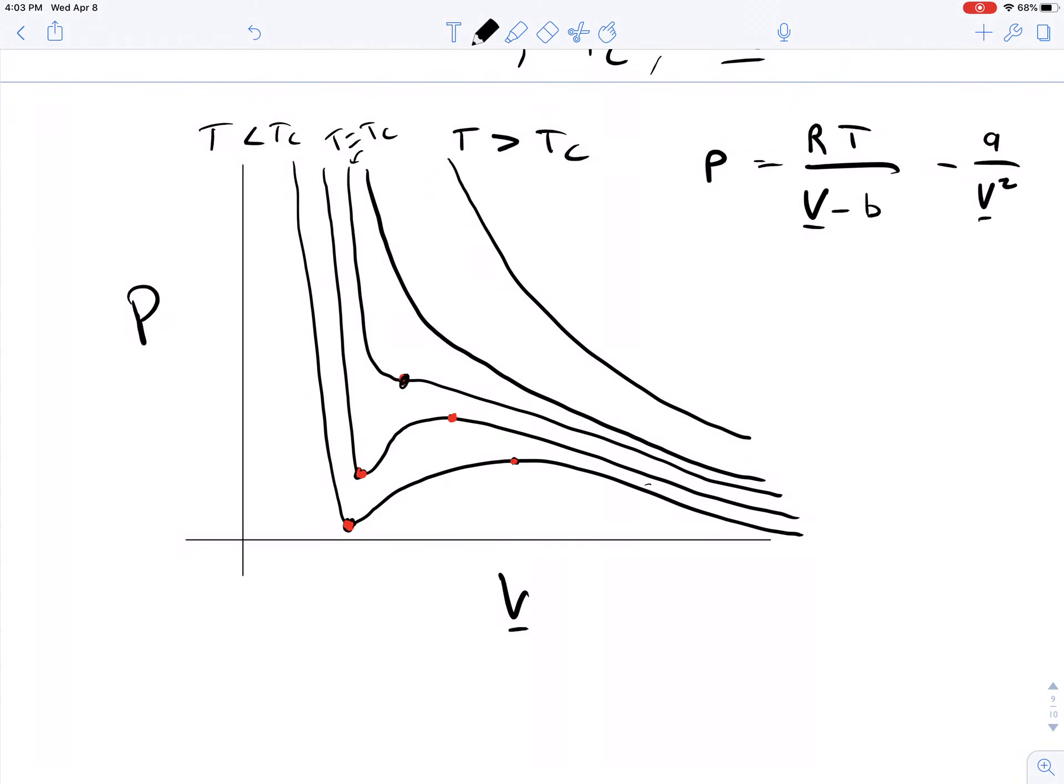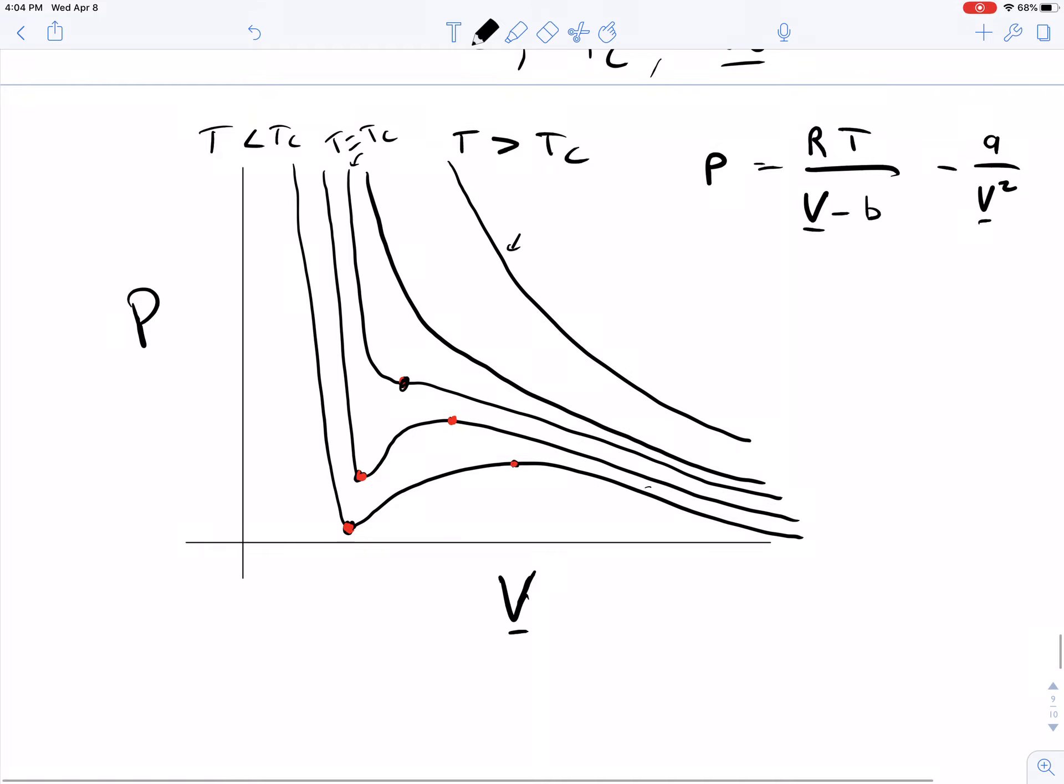Hello everyone. Starting with this diagram here with pressure and volume on the axes again. Each one of these, recall, is called an isotherm. It's a constant temperature line that shows the relationship of pressure and volume together on each of these curves.